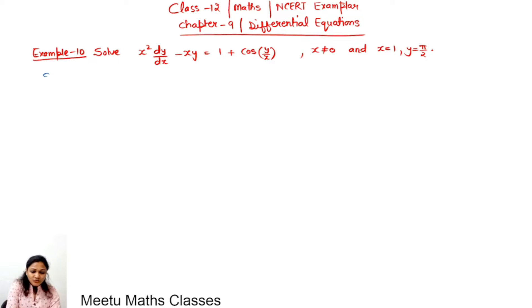Now to solve this differential equation, let us first write down dy by dx equals 1 plus cos y by x plus xy divided by x squared. Now here this differential equation is not homogeneous because this right hand side function is not a function of y by x.